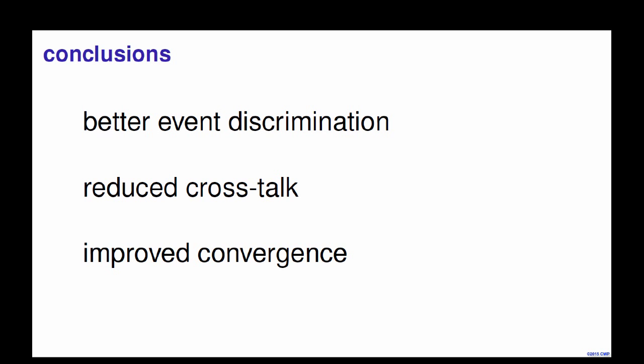In summary, I have shown the application of local correlations in the context of tomography. Our results show better event discrimination because local correlations are easier to interpret and provide information about delays along the time axis, essentially splitting what we see in a global correlation along the time axis. This gives better ability to discriminate travel time errors, reduces crosstalk, and as a byproduct of simpler correlation functions, we see improved convergence in the inversion. Thank you very much for your attention — happy to take questions.